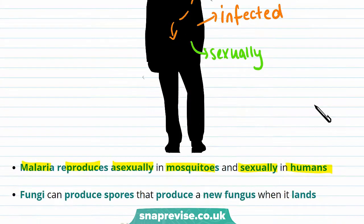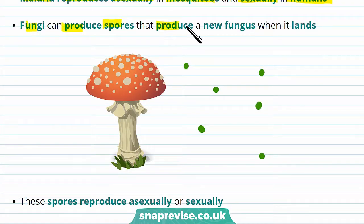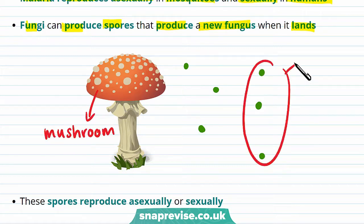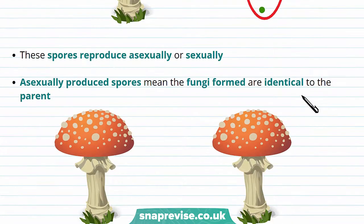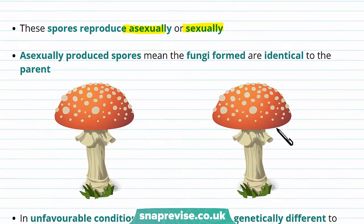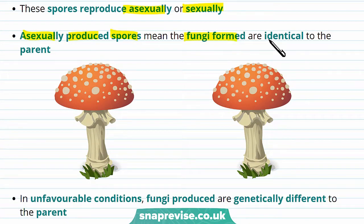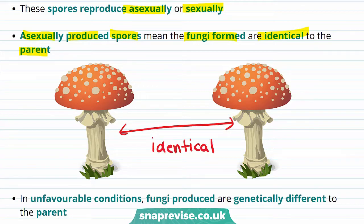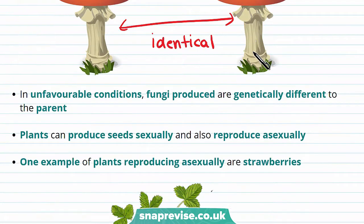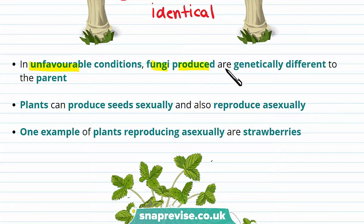Another example is fungi. Fungi produce spores that produce a new fungus when they land. A mushroom is a type of fungus, and it produces spores that can create new mushrooms. These spores can either reproduce asexually or sexually. Asexually produced spores mean the fungi formed are identical to the parent. However, when the environment changes and conditions become unfavourable, the fungi produced are genetically different to the parent, because in this case the spores are produced sexually.